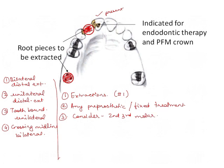Third, consider second and third molar related concerns. If this is a second molar, is it going to be used as an abutment? If yes, you have to consider it in the classification. Since nothing is mentioned here, we are going to consider it as present. These correspond to Applegate Rules 2, 3, and 4.